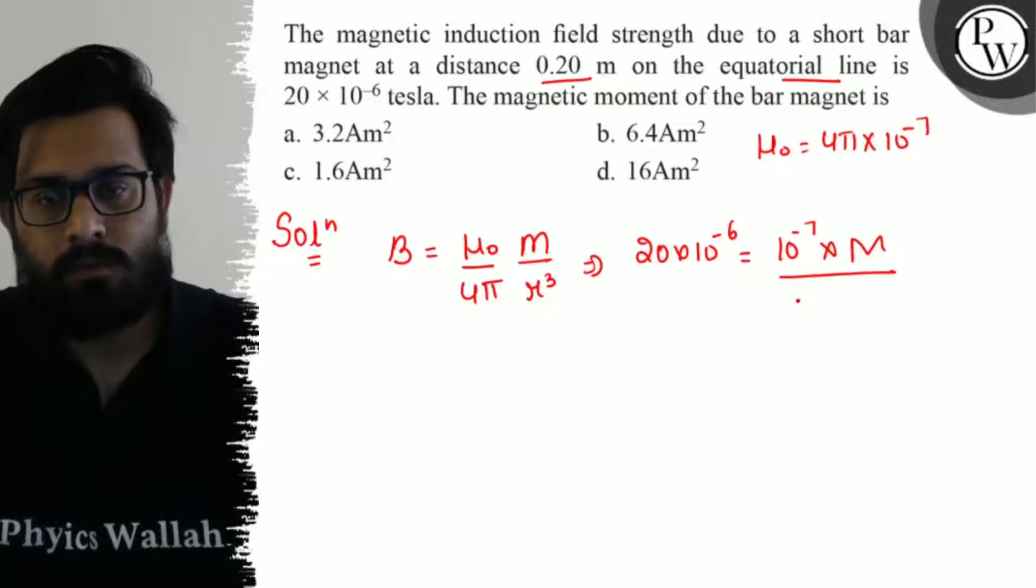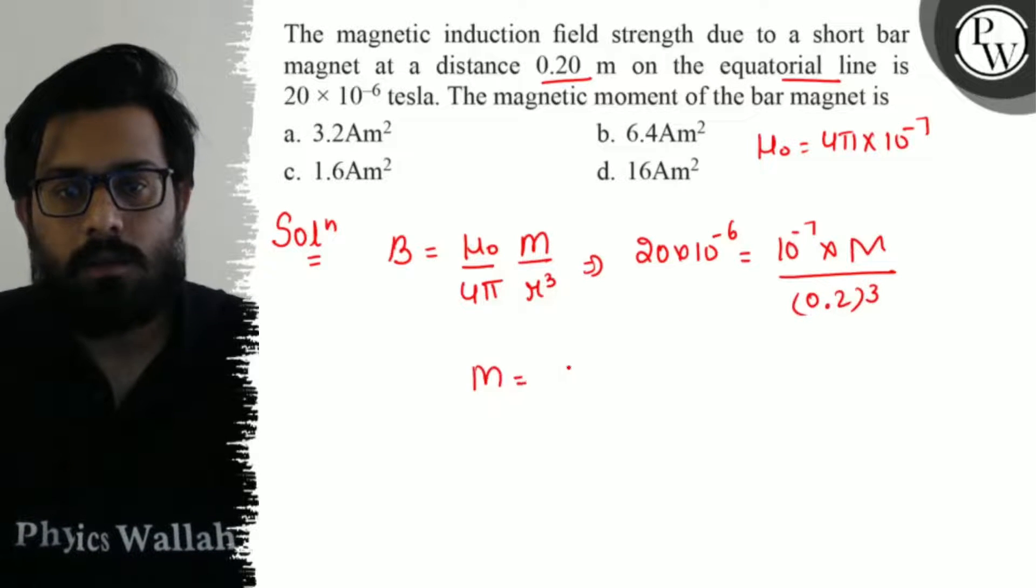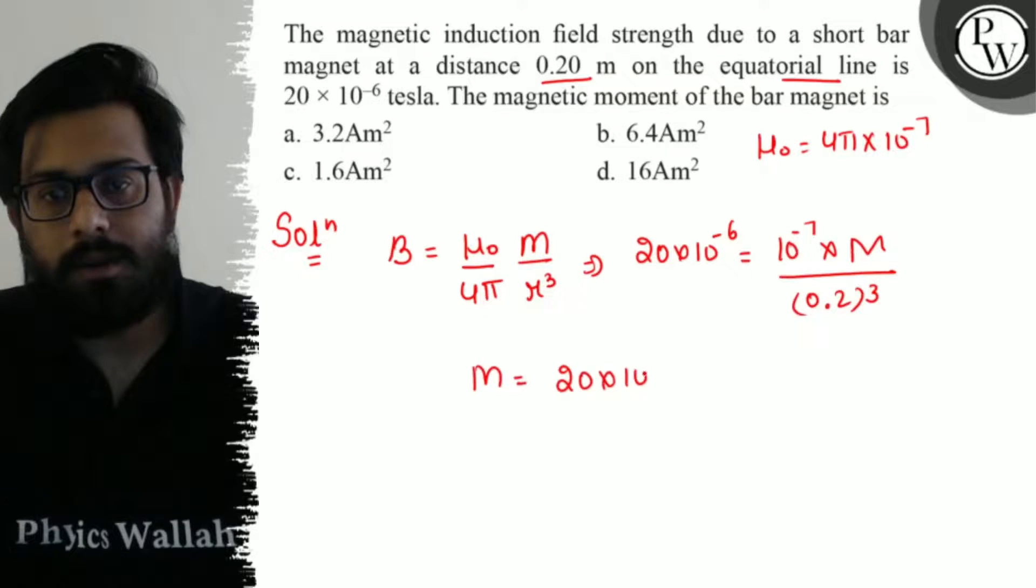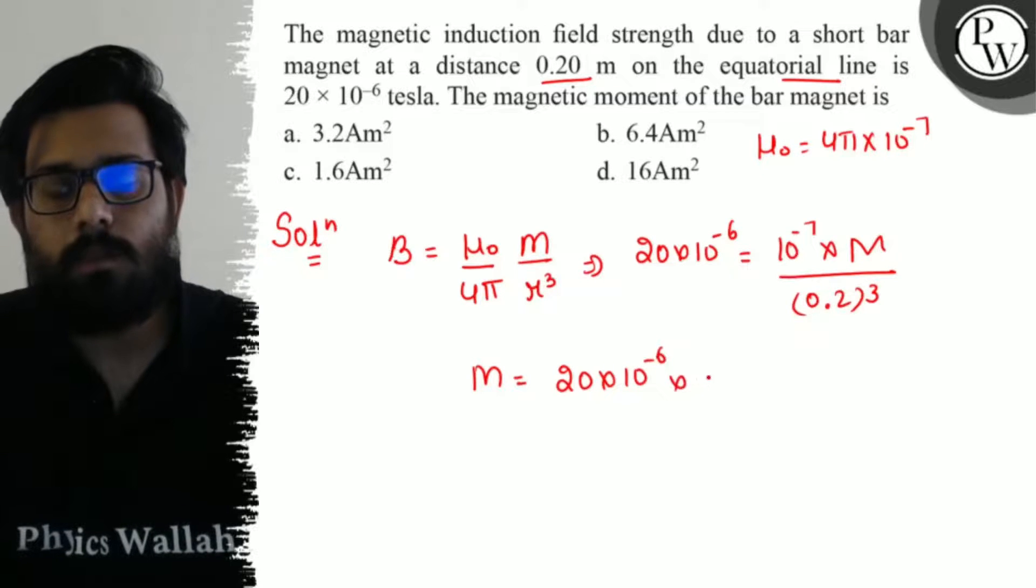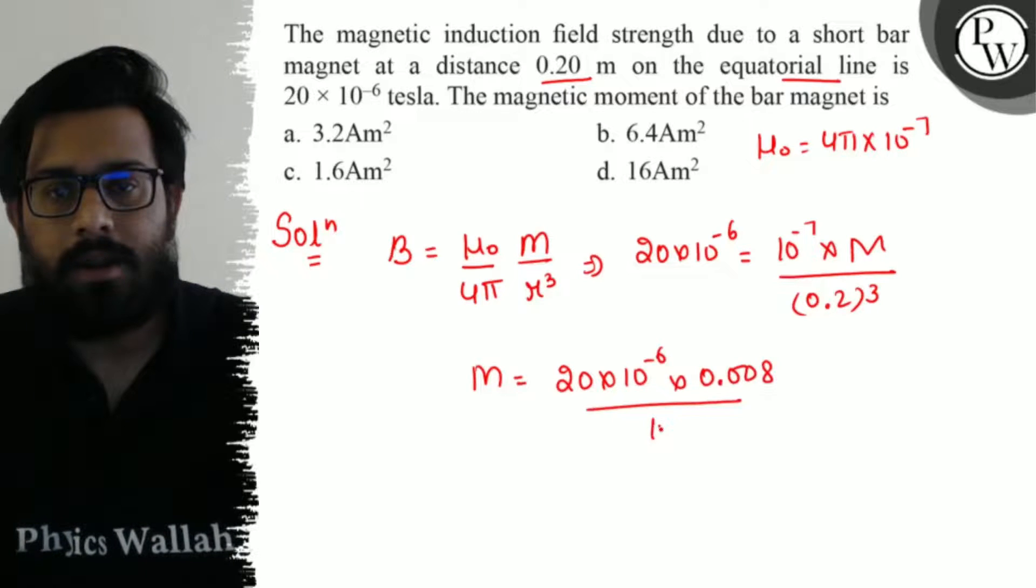So it comes out to be 10^(-6)×0.008 divided by 10^(-7). Solving it further, it comes out to be 10³, and this comes out to be 160×10...